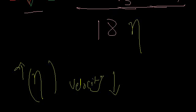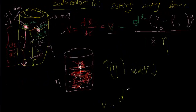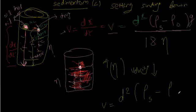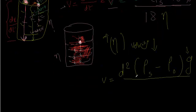So here is the formula for sedimentation rate based on Stokes law: V equals the diameter squared of the particle, times the difference in density of the suspended particle minus the density of the dispersing medium, times the gravitational acceleration g, all divided by 18 times the viscosity of the medium. The gravitational force is constant on Earth, and it's inversely proportional to the viscosity of the dispersing medium.